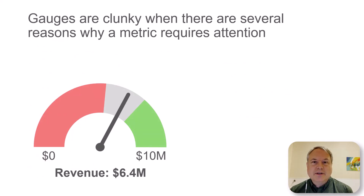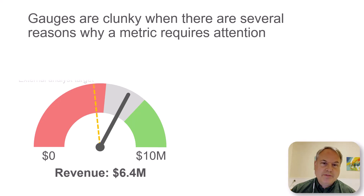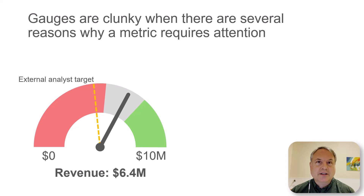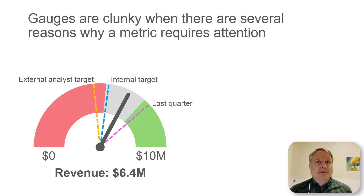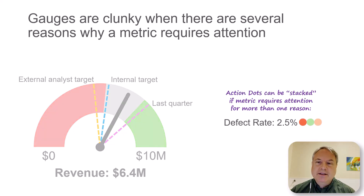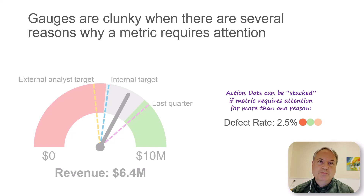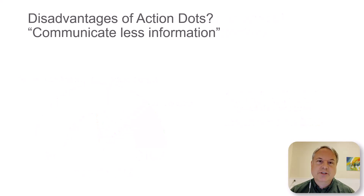A couple of other issues with gauges: they're clunky when there are several reasons why a metric might require attention. For revenue, I might care about how it compares to an external analyst target — maybe we're a public company, so what Wall Street's target is — plus an internal target, plus comparison to last quarter. As you can imagine, especially when there are lots of gauges on a dashboard, this gets pretty busy. Whereas action dots can be stacked — I can have multiple action dots beside one metric to show multiple reasons why it requires attention — and this is a lot easier to visually interpret.